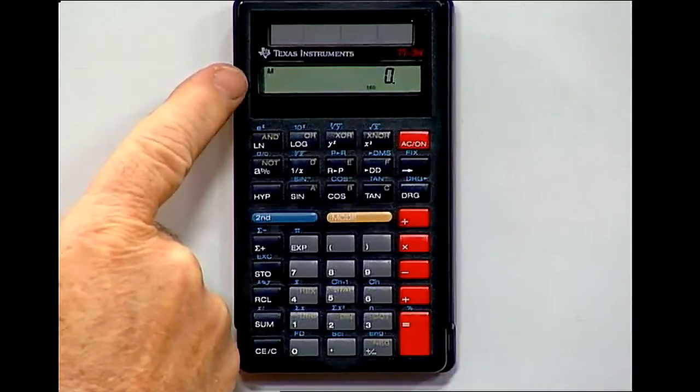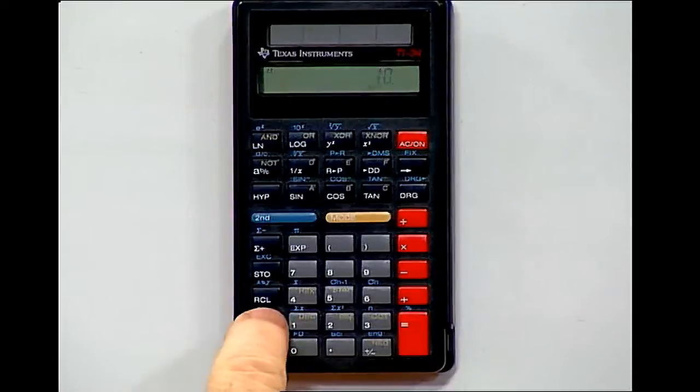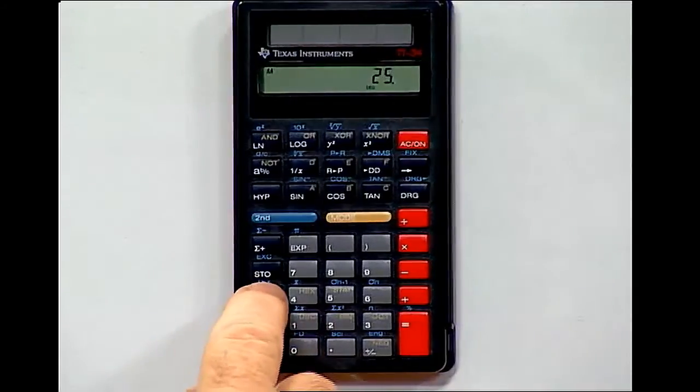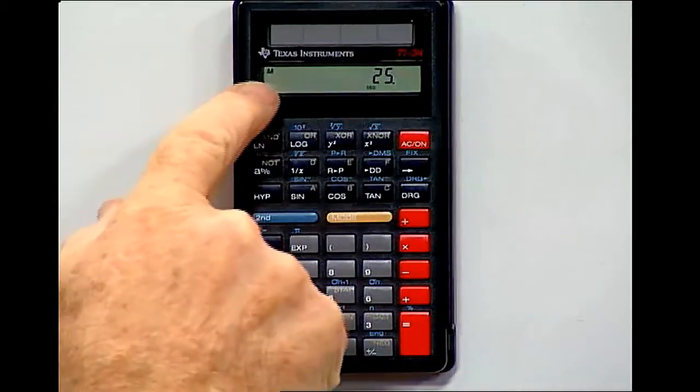That five is still in memory. Now, if I'm not careful, and I'm doing some kind of math problem, let's say 10, sum, plus 10, sum, recall, I get 25, I don't get 20, because that five was still in memory.